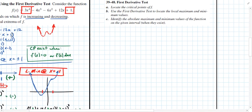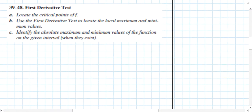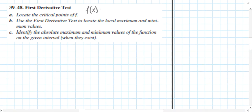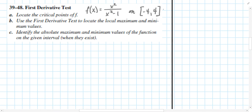I need to resume this video shortly due to a calendar commitment. Please consider the next example before starting the next video: apply these instructions to the function x squared divided by x squared minus 1 on the interval from negative 4 to positive 4. The Extreme Value Theorem will assist with identifying the absolute maximum and minimum. Give this one a shot on your own — I'll resume in the next video. Thanks for watching.